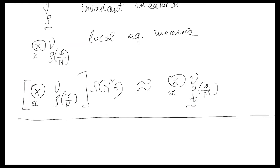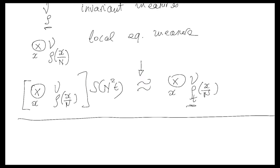One of the aims is: what do you mean by this? It would mean that if you integrate a local function — say the number of particles at the origin — against this measure and against that measure, the difference would go to zero. So local observables look the same under both measures. That is what is called propagation of chaos, or propagation of local equilibrium.